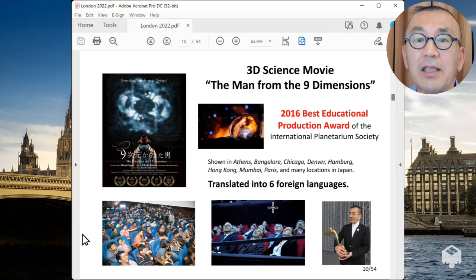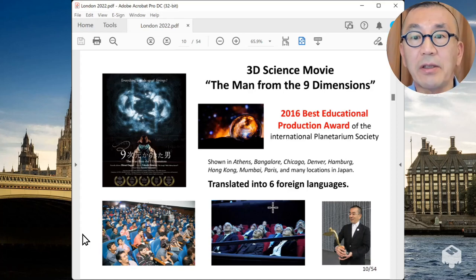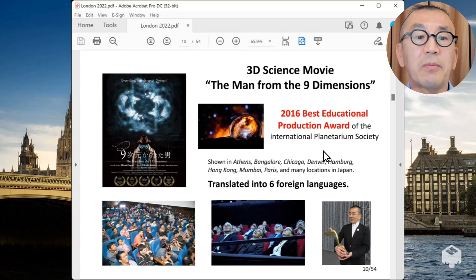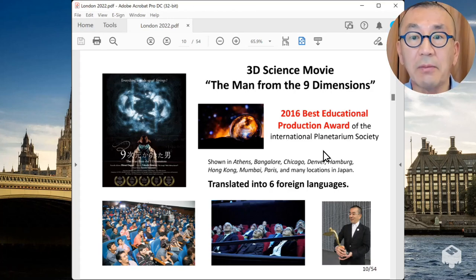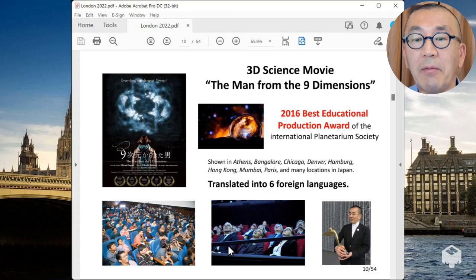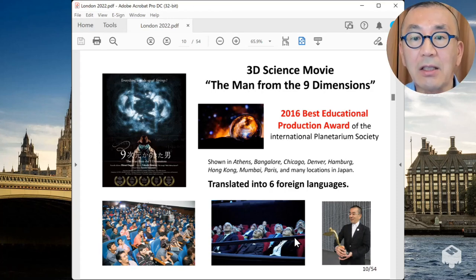This resulting science movie called The Man from Nine Dimensions, we are delighted that as soon as it debuted in Tokyo in 2016, it received the Best Educational Production Award from the International Planetarium Society. It is the highest award of the society the society only gives in every other year.